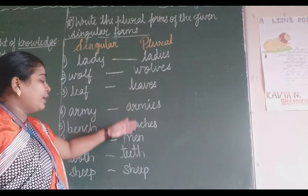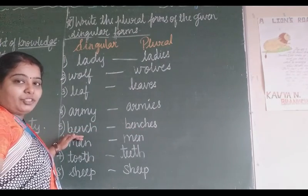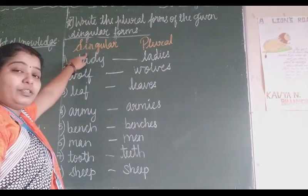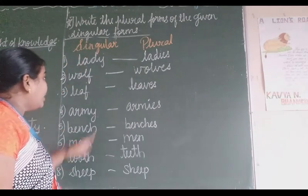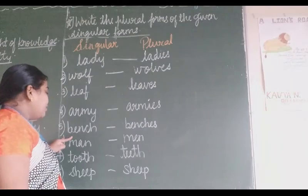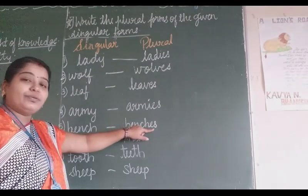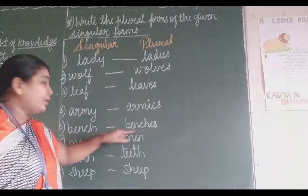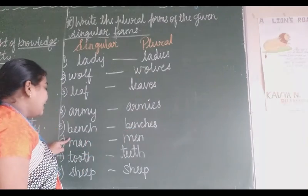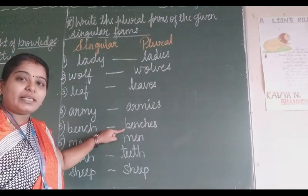If a plural word is given like 'bench', you will have to find the singular word 'bench'. B-E-N-C-H is the singular word. You have to see both the singular and plural forms. 'Bench' — C-H is there, so at the end we will use E-S to make it plural. So 'bench' becomes 'benches' — B-E-N-C-H-E-S. Benches.